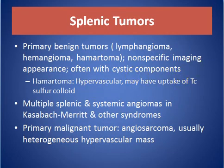Benign splenic tumors include lymphangioma, hemangioma, and hamartoma, and have non-specific imaging appearances, often with cystic components. Hamartoma is hypervascular and may show uptake of technetium sulfur colloid. Multiple splenic and systemic angiomas can also be seen in Kasabach-Merritt and other syndromes.